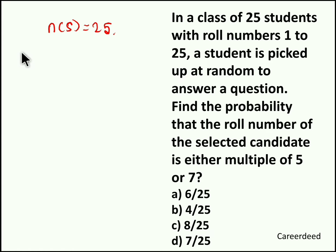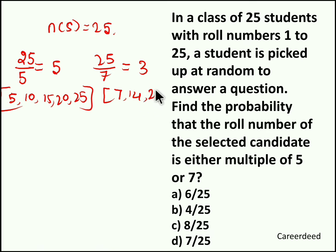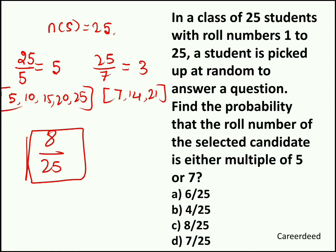From them we have to select a candidate whose roll number should be a multiple of 5 or a multiple of 7. We have 25 by 5, which gives 5 multiples of 5: that is 5, 10, 15, 20, and 25. And we have 3 multiples of 7 in 25 — dividing 25 by 7 gives 3 times — so the numbers are 7, 14, and 21. The next number would be 28, which exceeds 25. So totally we have 5 plus 3, which is 8 events. If you closely look at the numbers, there is no repetition, so no need to subtract. Therefore 8 out of 25 is the probability. Answer for this question is 8 by 25.